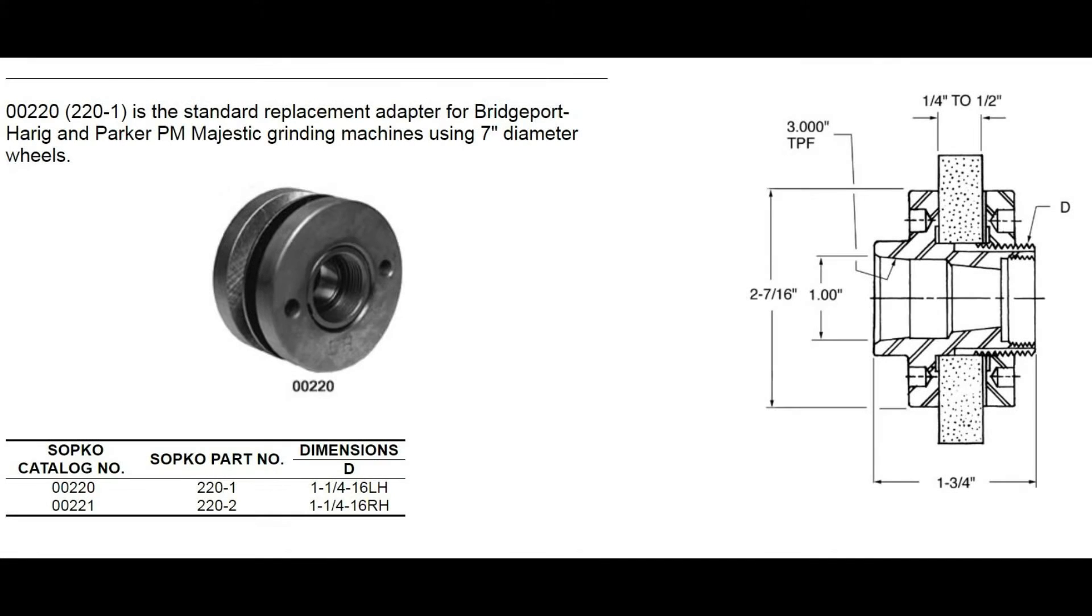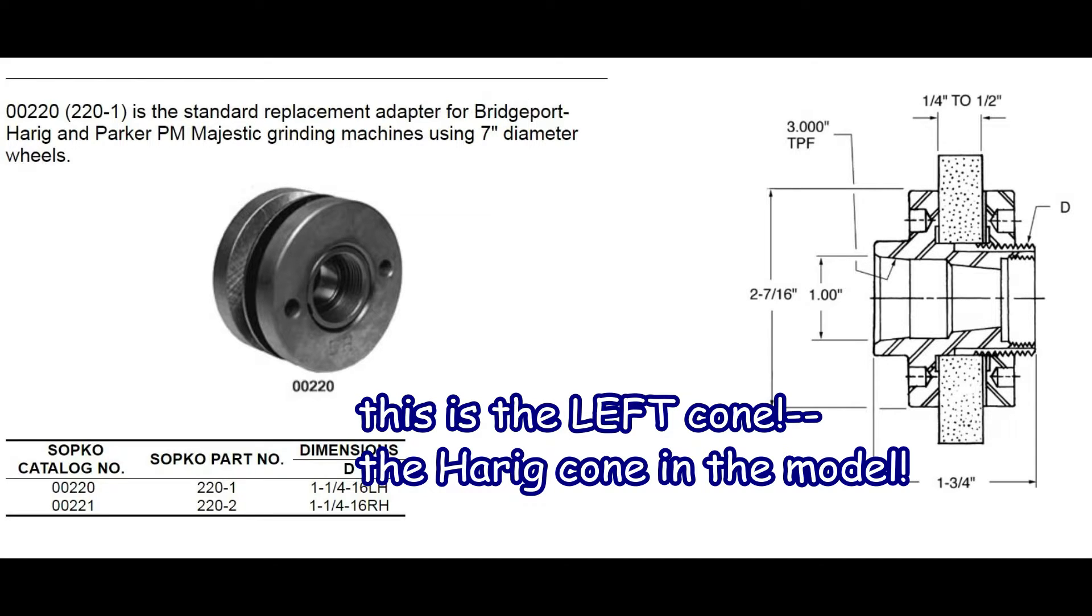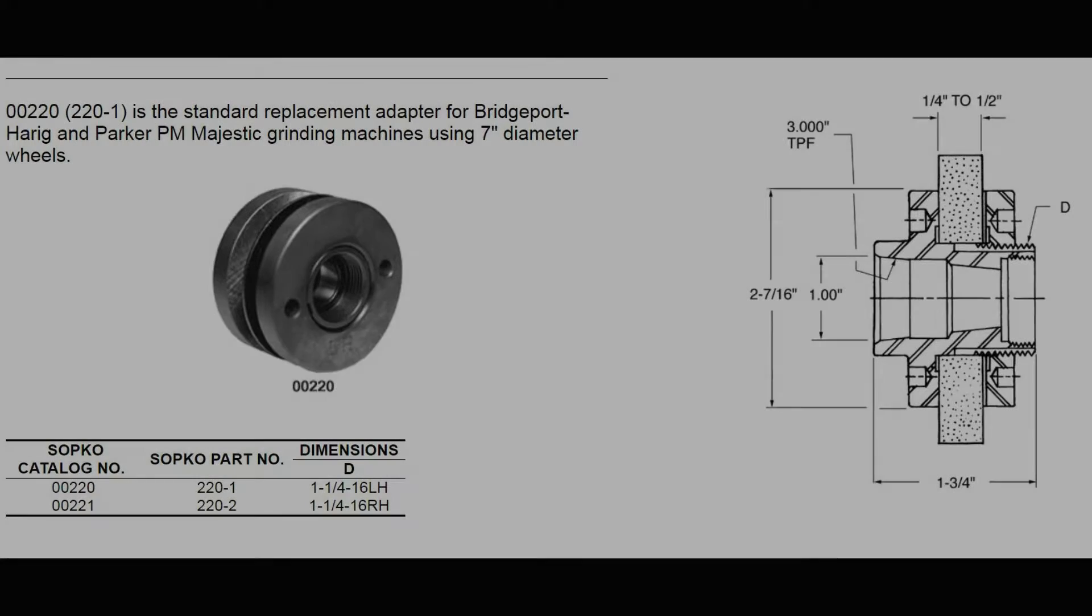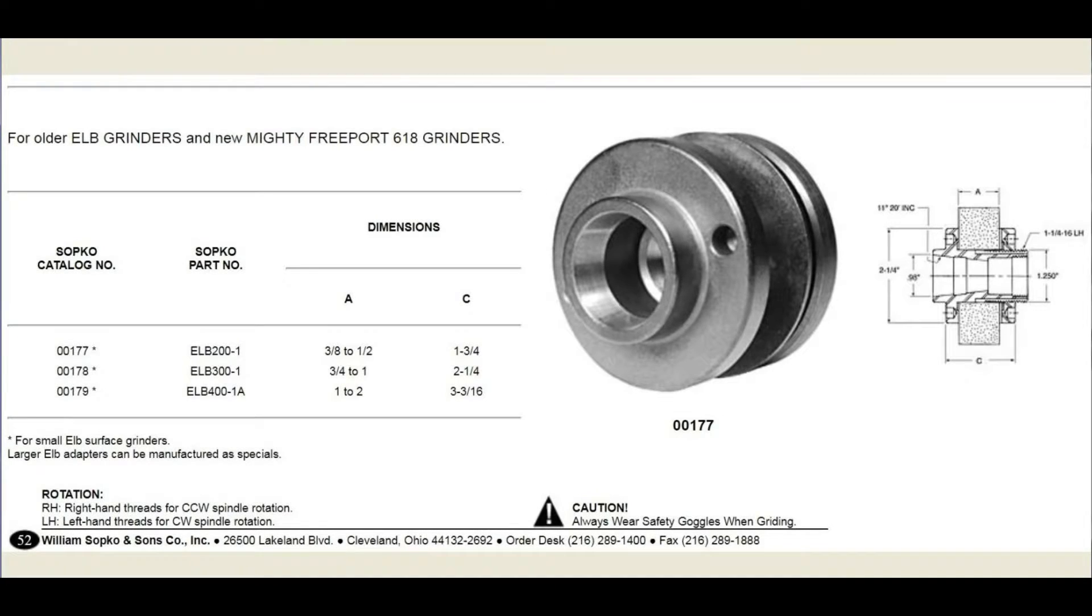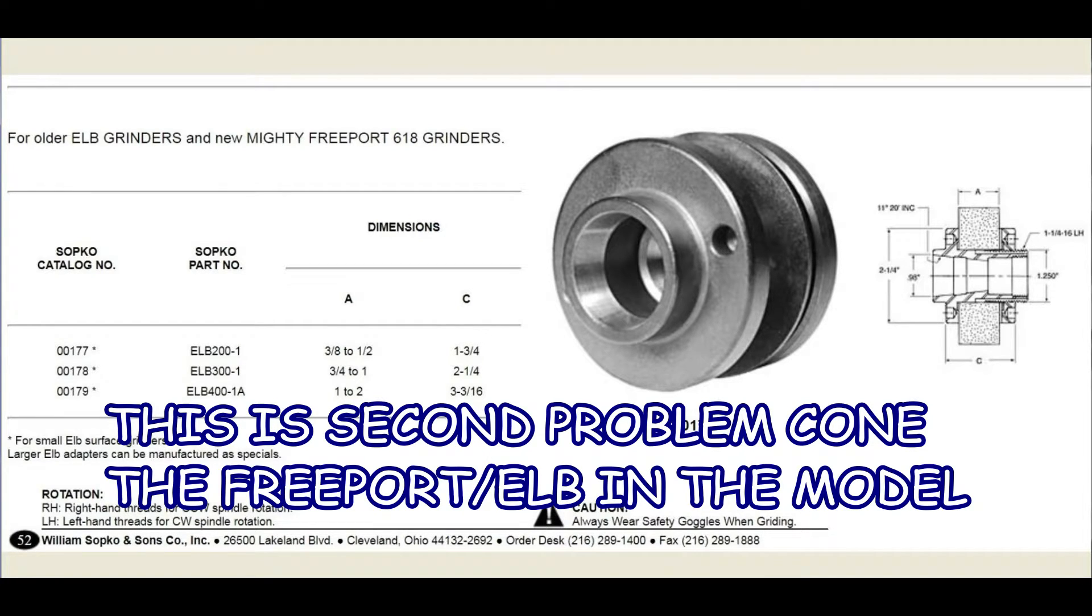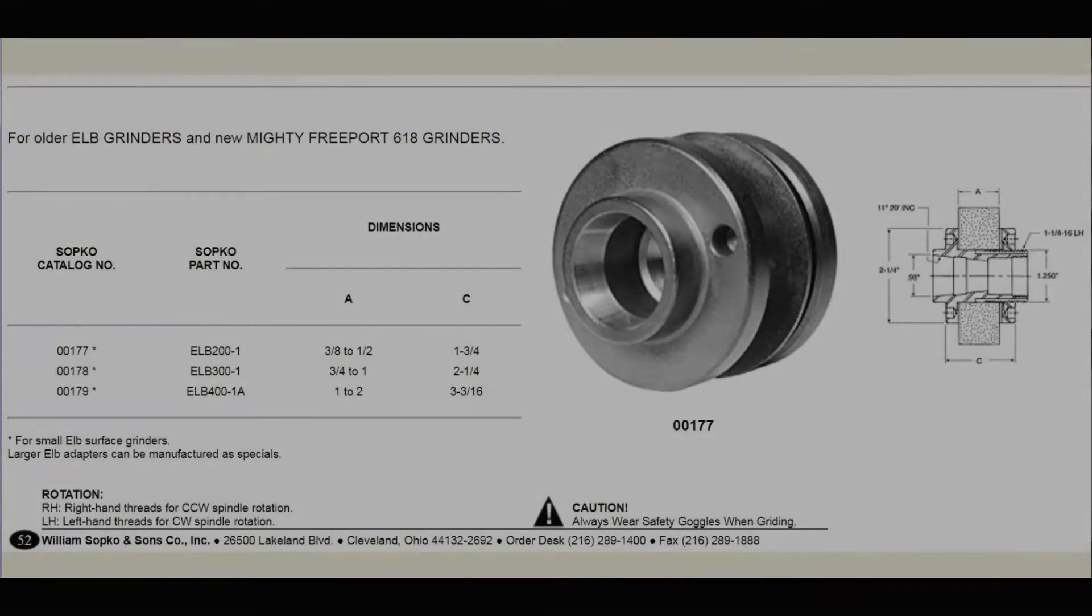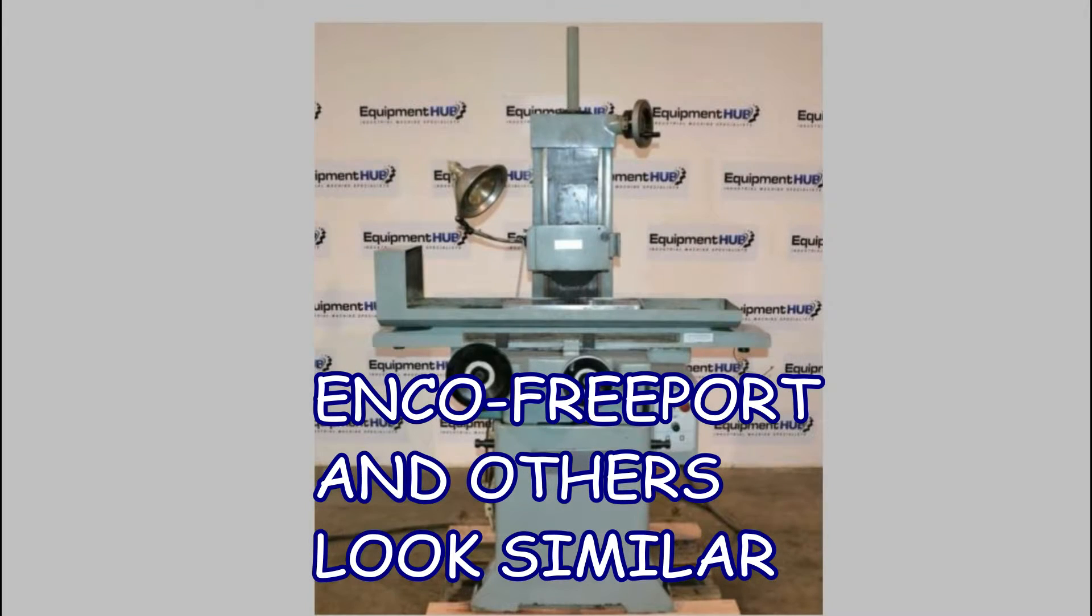And there's a Harig hub. See the numbers are there. I threw a lot of crap in here. That's for that second cone, the problem cone. I think it was blue. That's what that hub is. And that hub I just mentioned, that's what it goes on. Inco Freeport and others that look similar.